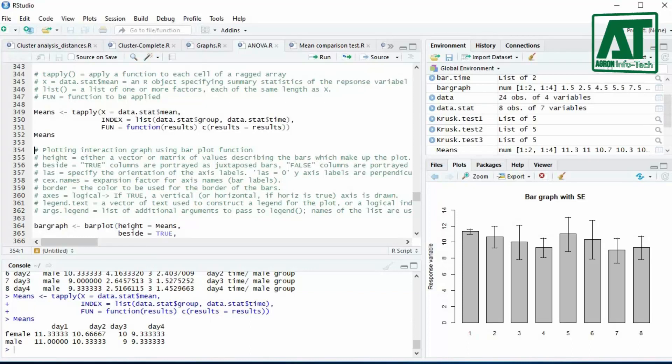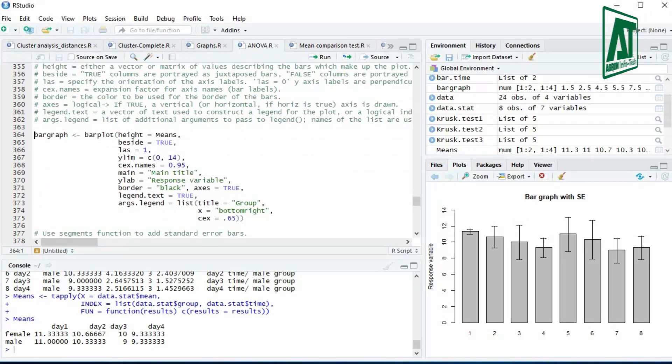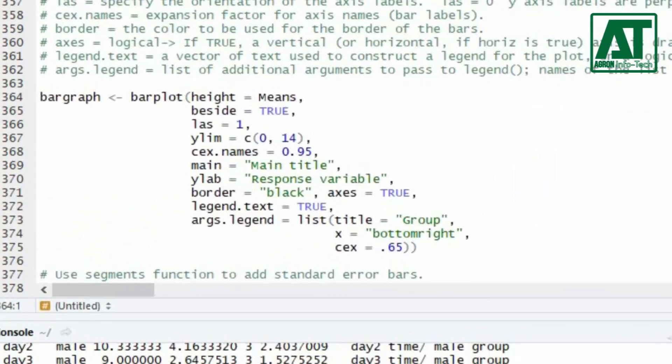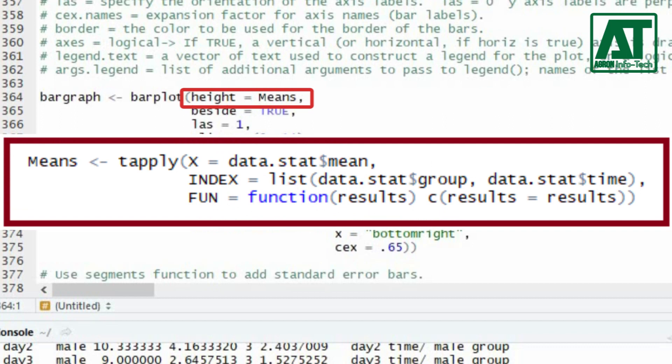Now we can use barplot function to plot bar graph with factor categories. Barplot function requires some arguments. For height argument use object means as created earlier for interaction mean matrix.